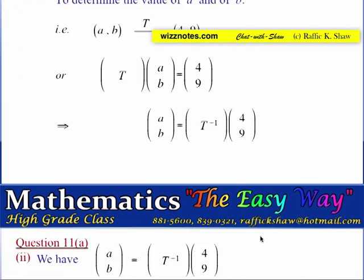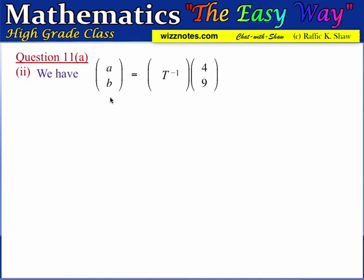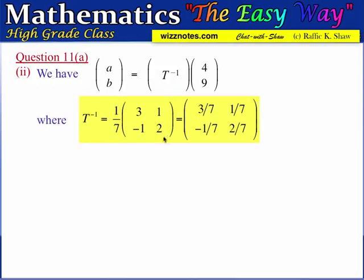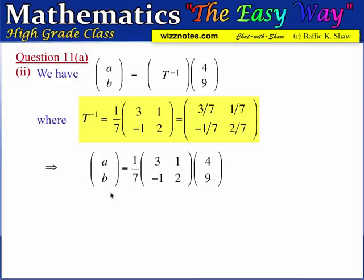To carry out this multiplication, we use the form of T⁻¹ with the fraction outside, because working with fractions can complicate calculations. We leave the 1/7 factor outside and multiply the integer matrix [3,1; -1,2] by [4,9] first, then divide the final result by 7.